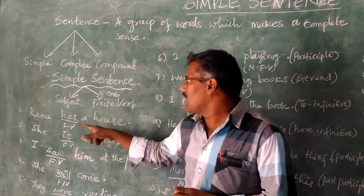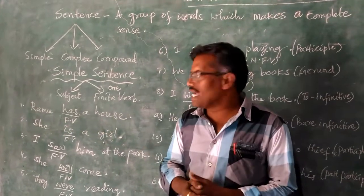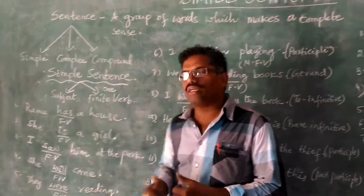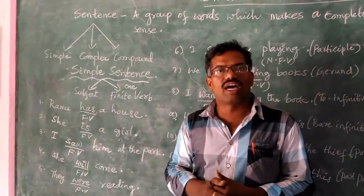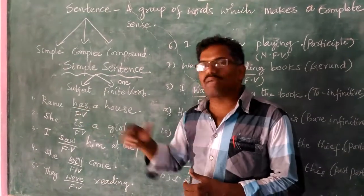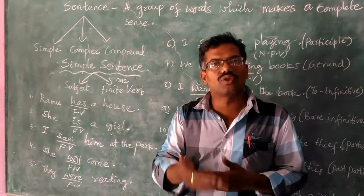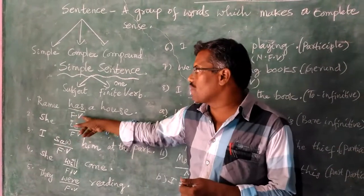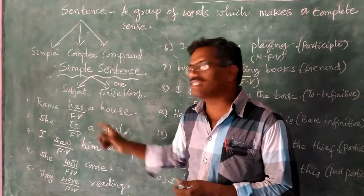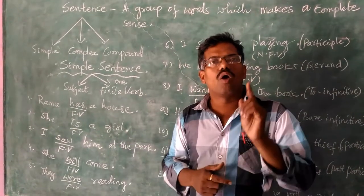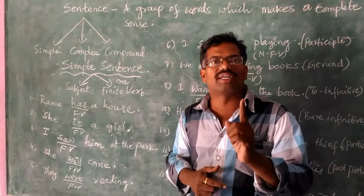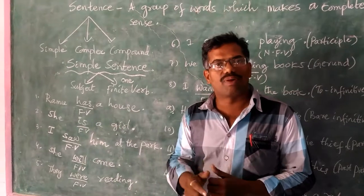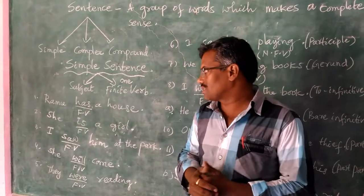Ranu has a house. Here, 'has' is called a finite verb because 'has' can be changed into other tenses. So it is called a finite verb. This sentence has only one finite verb, so this sentence is called a simple sentence.